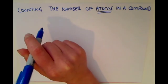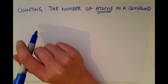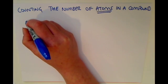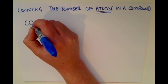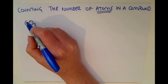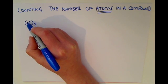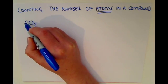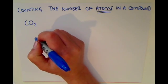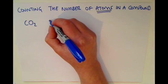In a previous video we looked at counting the number of elements in the compound. For example, if you had a compound like CO2, to count the elements you would look for the capital letters. So we have a capital C for carbon and a capital O for oxygen, so we know that there are two elements in there.